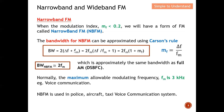Taking fm, the frequency of the modulating signal, as a common factor from the Carson's rule equation, the peak frequency deviation divided by fm becomes the modulation index mf. For narrow band FM, since the modulation index mf is less than 0.2, we can omit this term, and the bandwidth simplifies to approximately 2fm.